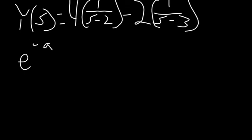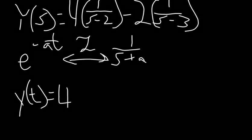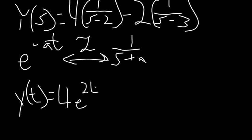And given that e to the AT has the Laplace transform of 1 over s minus A, the final answer is y of t equals 4e to the 2t minus 2e to the 3t.